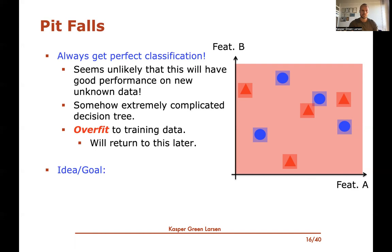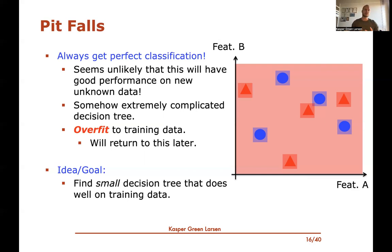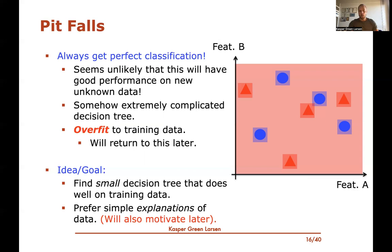What seems to go wrong is that this is a very complicated, huge decision tree — as large as the training data itself. This is what we call overfitting, which we'll return to in more depth later. The idea to get around this is that we want to find a small decision tree that does well on the training data — we prefer simple explanations of the data.